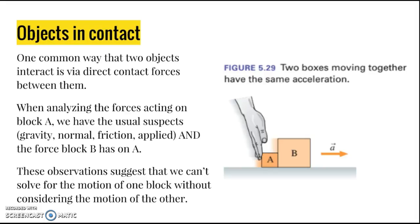When analyzing the system — say we're looking at object A — the forces acting on it include the usual gravitational force, normal force, and if there's friction, a frictional force. There's also a pushing force due to the hand, and in addition, a contact force that block B applies on block A. The key point here is that both boxes are moving together and therefore have the same acceleration.